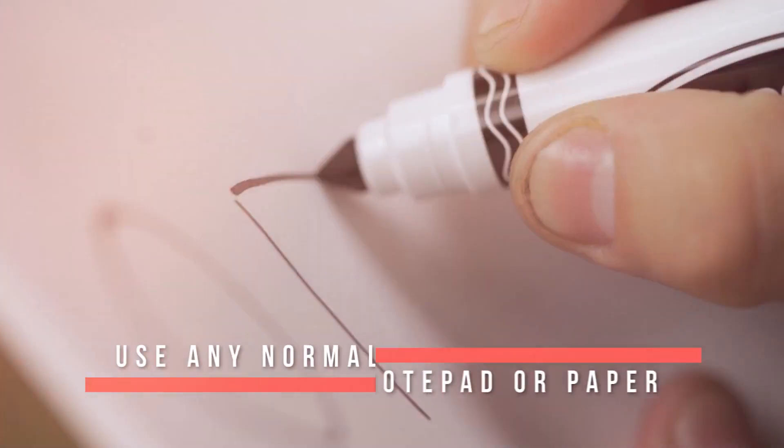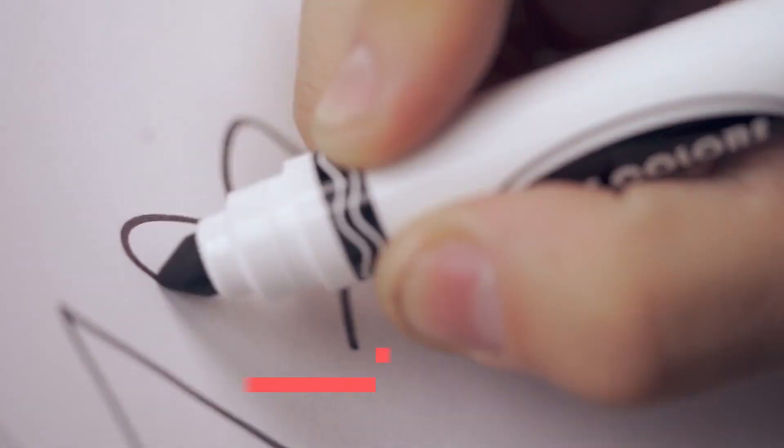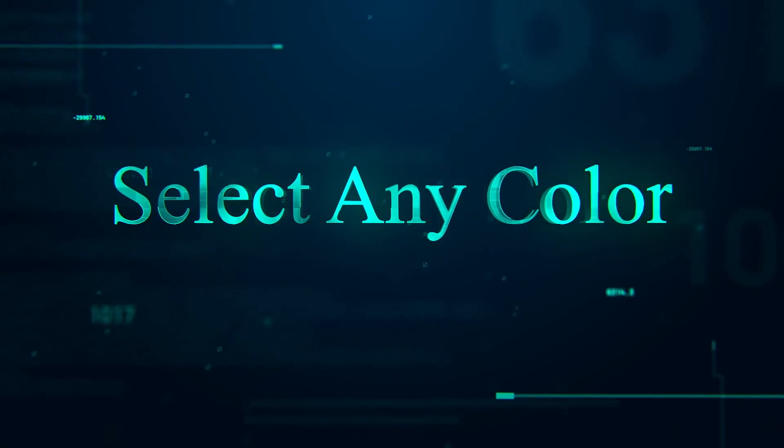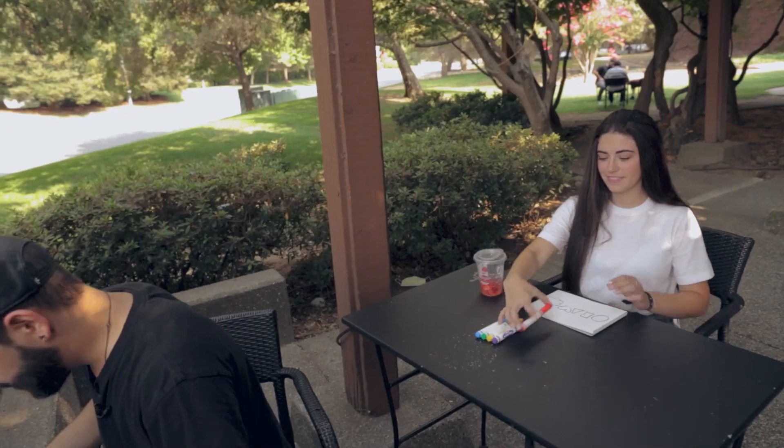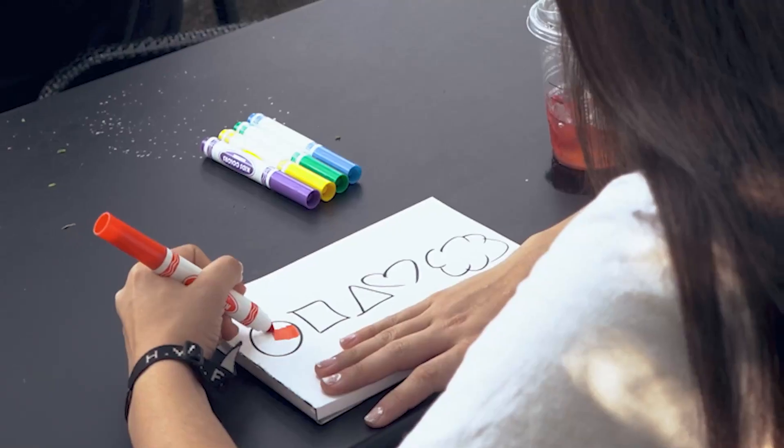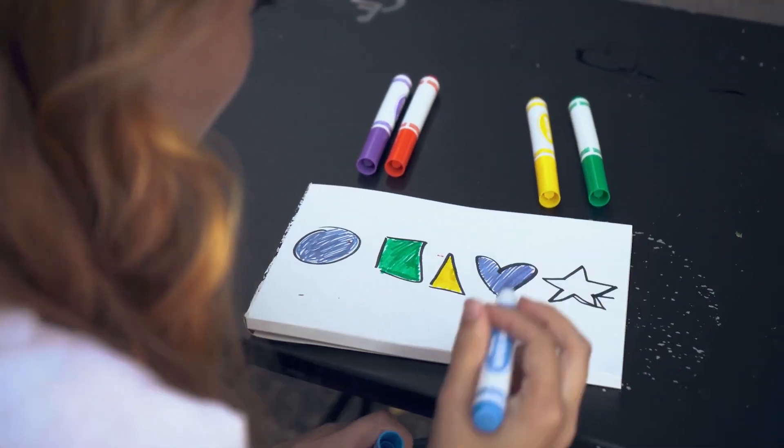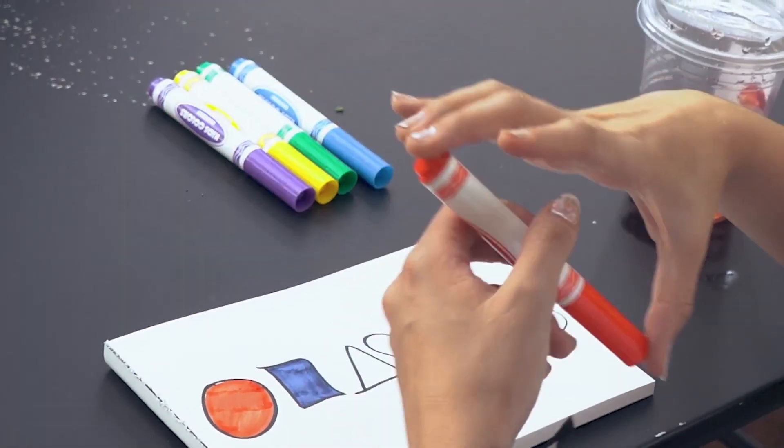Here I have two pads, and I've already drawn a circle, a square, triangle, a heart, and a cloud. Randomly pick any color you want and start coloring it in. I'll do the same while looking away. You can actually pick the same color for the next shape if you want. It's completely up to you.